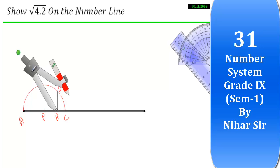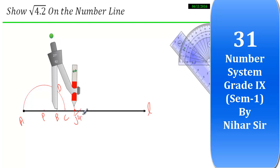I will take the radius PD, and my center will be P, and then I will draw the arc on line L. Let me name it line L. So this point is my root 4.2 on the number line.